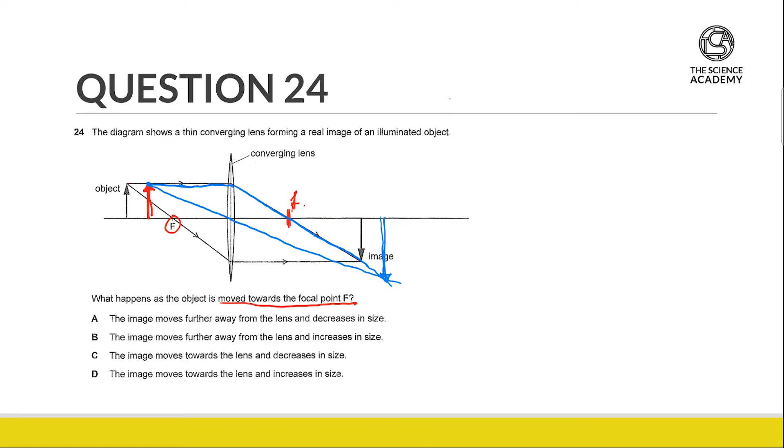And if we draw the second ray, you realize that the rays will meet slightly further. Of course I'm not drawing it with a ruler or to scale, but you can see very roughly that the image does two things: the image moves further away from the lens and the image is also larger. So it moves further and it increases in size. Answer is B.